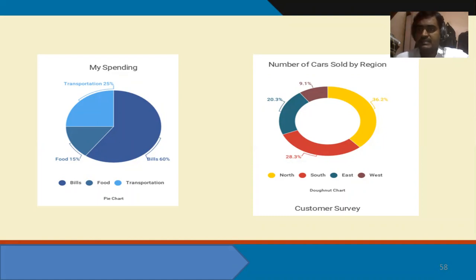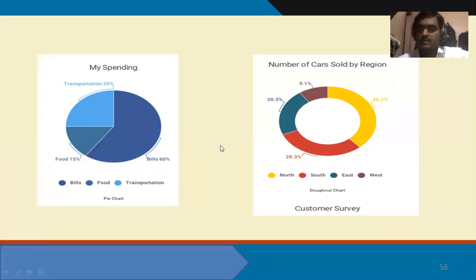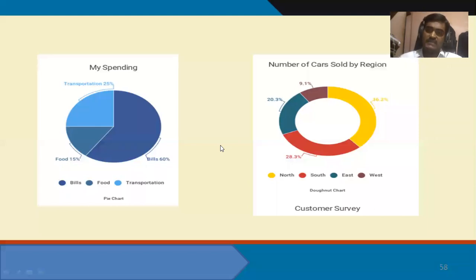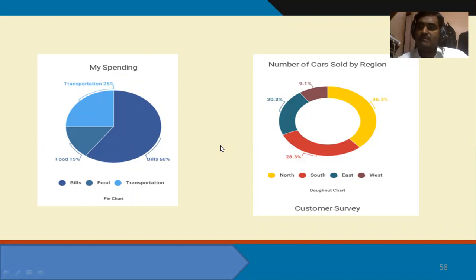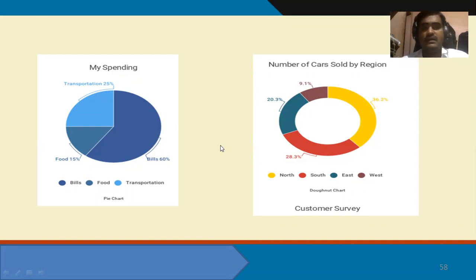Another example: number of cars sold by region. In the north region, 36.2 percent were sold; in the south region, 28.3 percent; in the east region, 20.3 percent; and in the west region, 9.1 percent. The left-hand side is a standard pie chart, while the right-hand side is a nested pie chart. That is the major difference between the two.